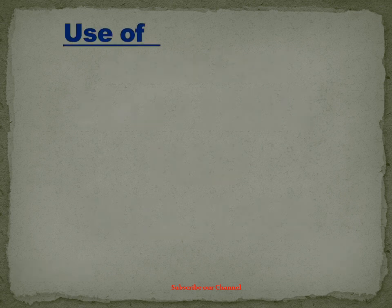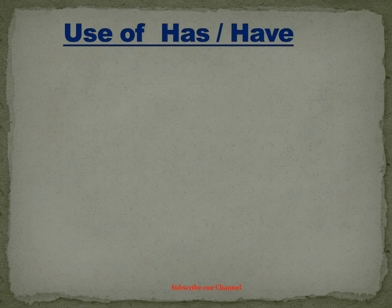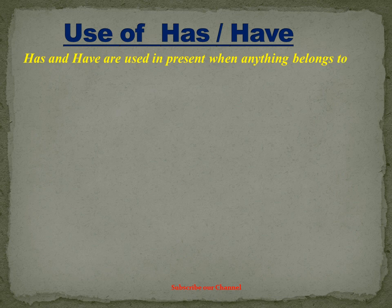Let's begin with the first one, use of has and have. Has and have are used in present when anything belongs to you or you possess any item or individual.